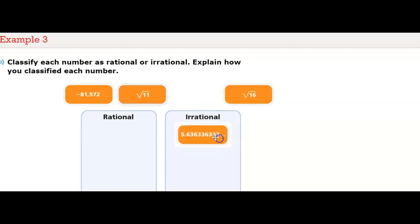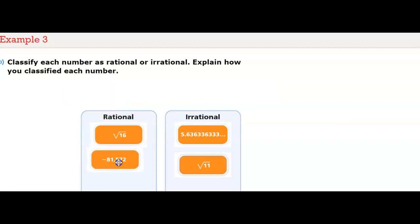All right, so I know this is irrational because it's a decimal that continues. It's not repeating. It just goes on. The square root of 11 is odd and it's 11. So I know that's not going to be a perfect square. So that's going to also be an irrational decimal. The square root of 16 will give us an integer. So that would be a rational number. And then negative 81,572 will also be rational.